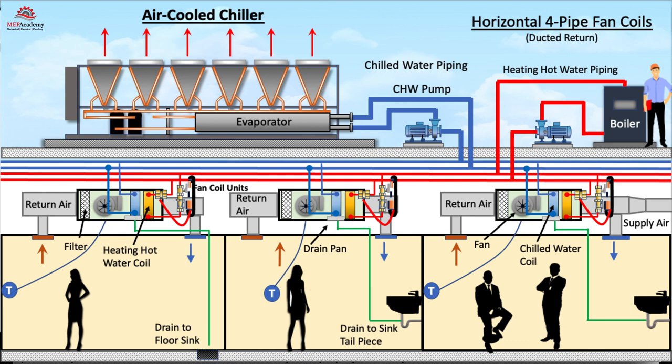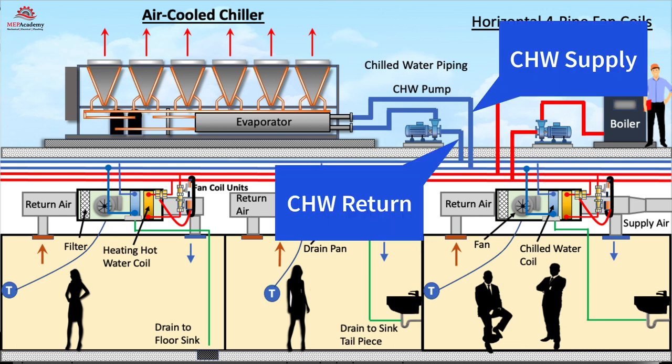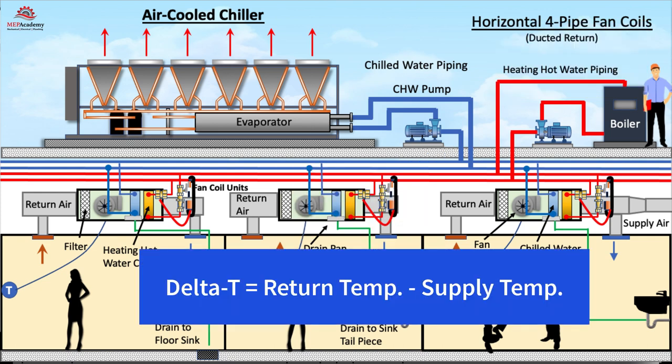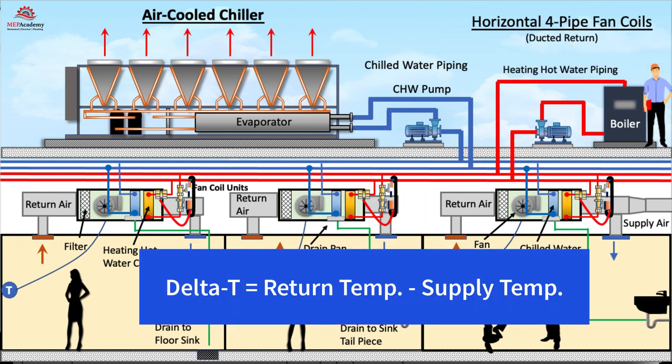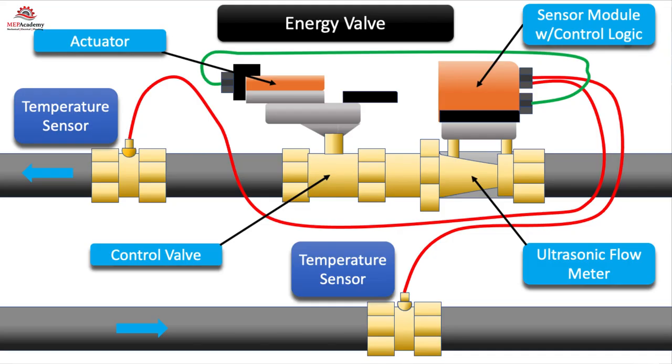In order to do this, we need the water to increase in temperature as much as possible between the chilled water supply and chilled water return. This is indicated by the delta T, the difference in temperature between the supply and return. A higher delta T requires less to be pumped through the system saving on pump energy. In order to avoid providing too much flow to a coil or heat exchanger, an energy valve can ensure optimization of system flow.